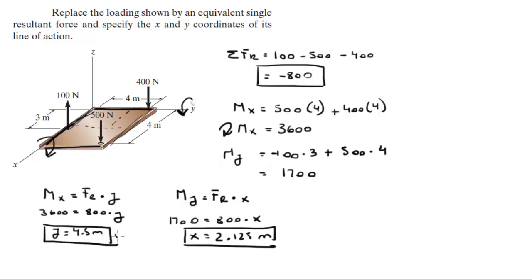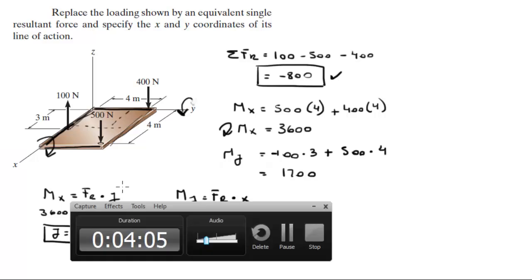So this is the coordinate where this resultant force of negative 800 going down will be acting on this plate.